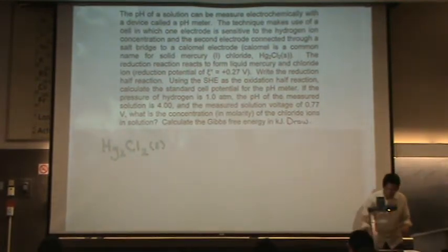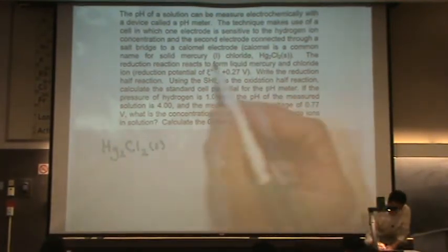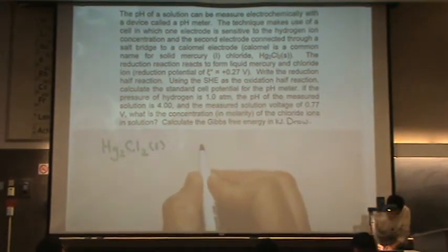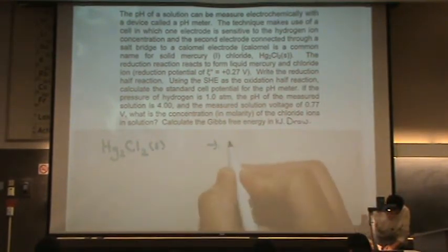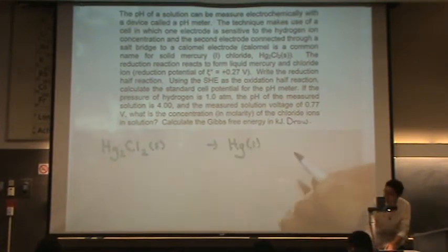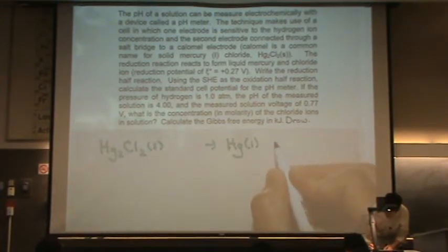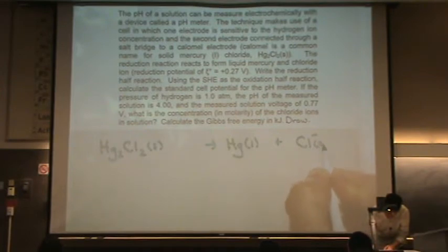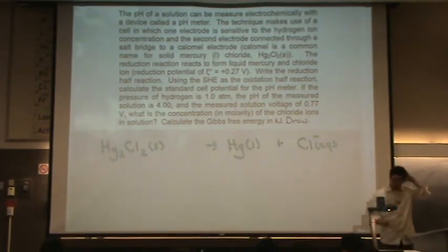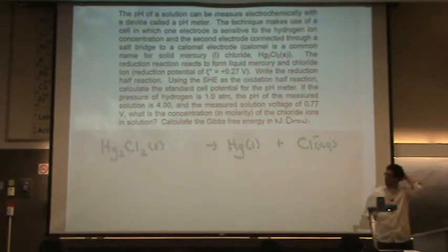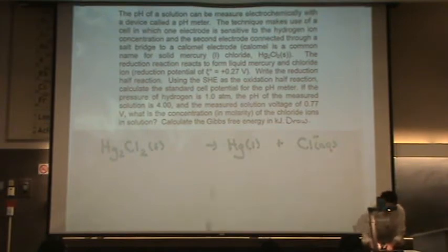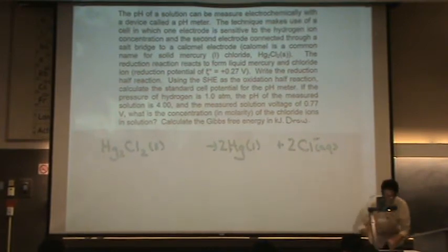And it says it forms liquid mercury and a chloride ion. So, because mercury in its elemental state would be a liquid at standard conditions and in the chloride ion, Cl-. So, since it's an ion, it's aqueous. We want to balance the reduction half-reaction. So, the first step is to balance anything that's not oxygen or hydrogen. So, let's balance the mercury. Two mercuries on each side and two chlorines on each side.